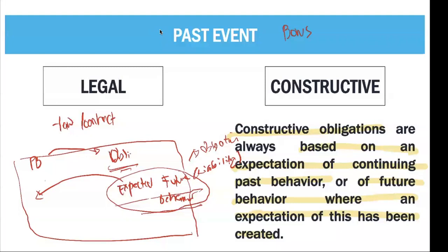Another example of constructive obligations are warranties. If it is a continuing behavior that in case an item which is sold was not properly fit for its purpose, it should be covered by a warranty — that is a constructive obligation based on past behavior. Your past event can be based on a legal event or a constructive event, which creates an expected future obligation.